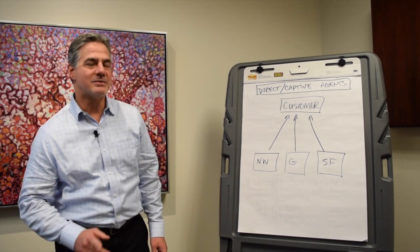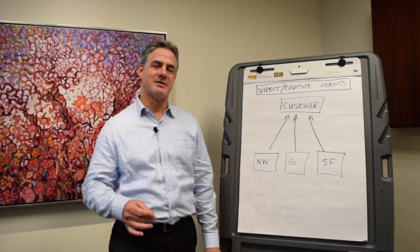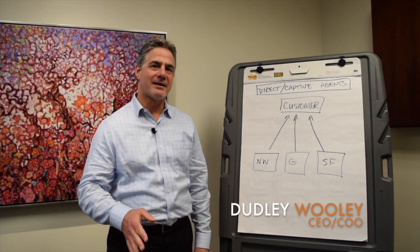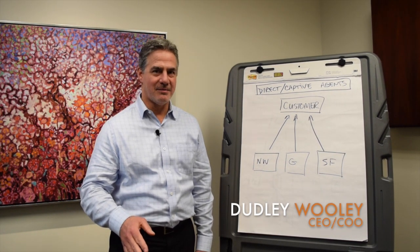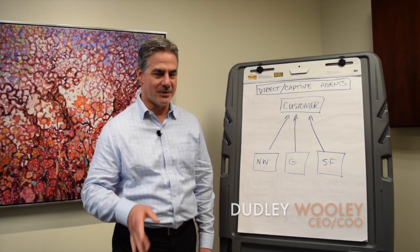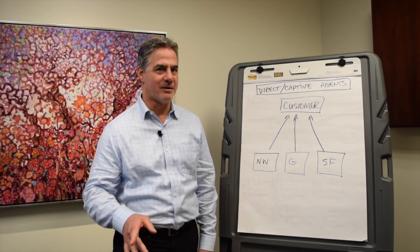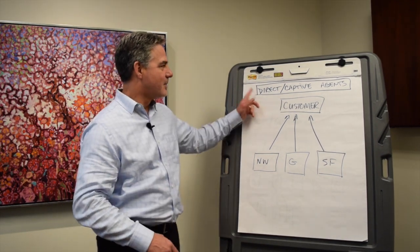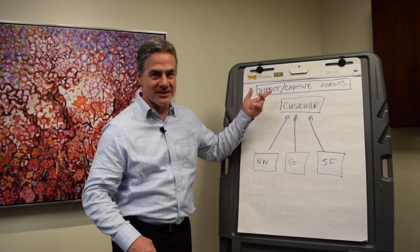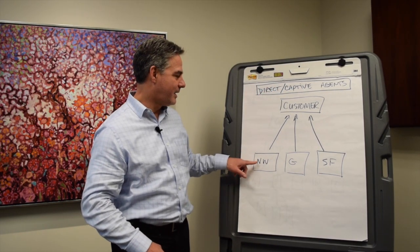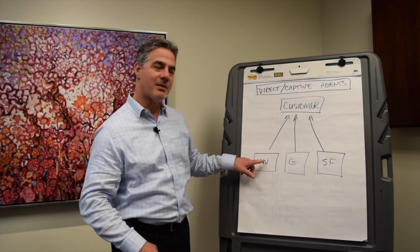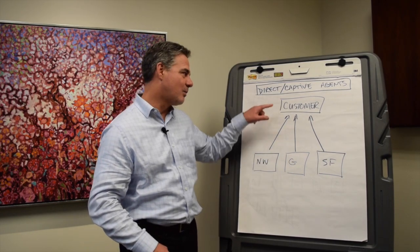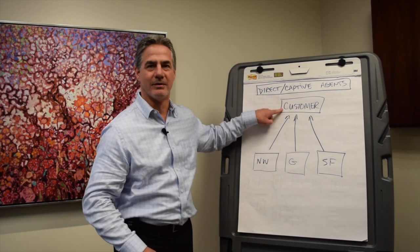Today's question is: what is the difference between a direct agent and an independent agent? We get that question a lot in our business. So I've drawn a picture up here. A direct, or captive, agent, as they're sometimes called, are individuals that represent insurance companies directly with the customer.